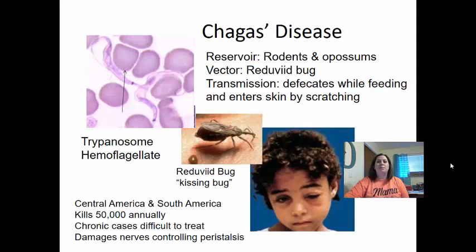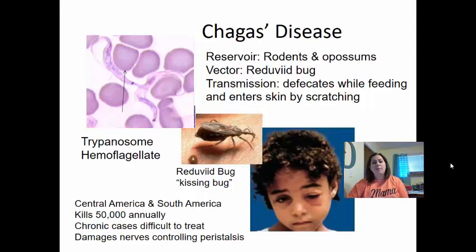Chagas' disease has its reservoir in rodents and possums. The vector is a Reduviid bug, also known as the kissing bug, because it is attracted to carbon dioxide and bites around the face and mouth. The bug bites and defecates while feeding, releasing the protozoan. It enters the skin when the individual scratches the bite. This is a trypanosome — a hemoflagellate that likes to be in the blood. It is found in Central and South America and kills about 50,000 people annually. Chronic cases can damage the nerves controlling peristalsis in the GI tract.